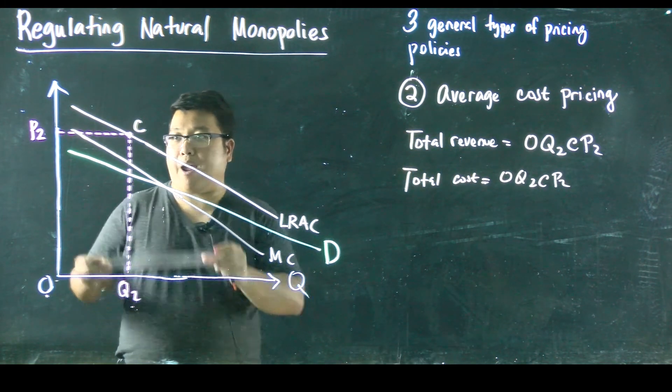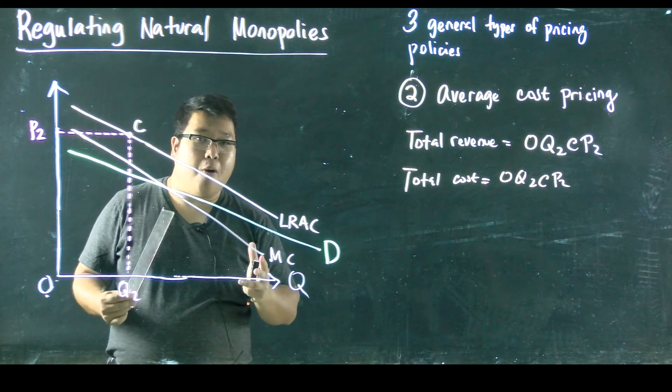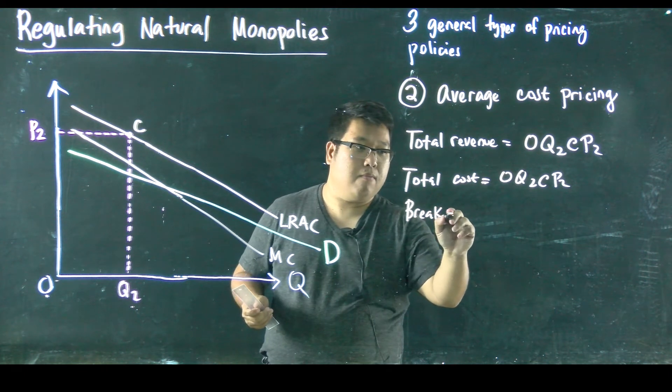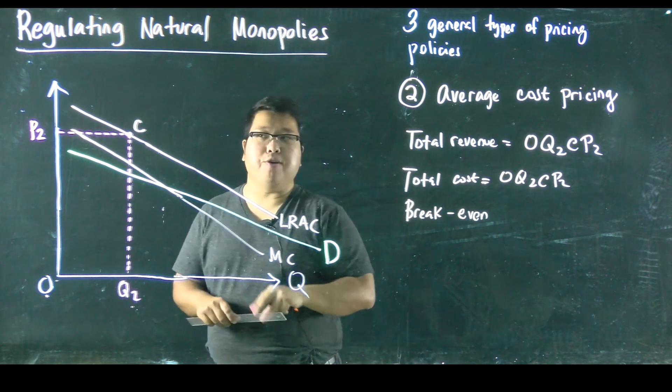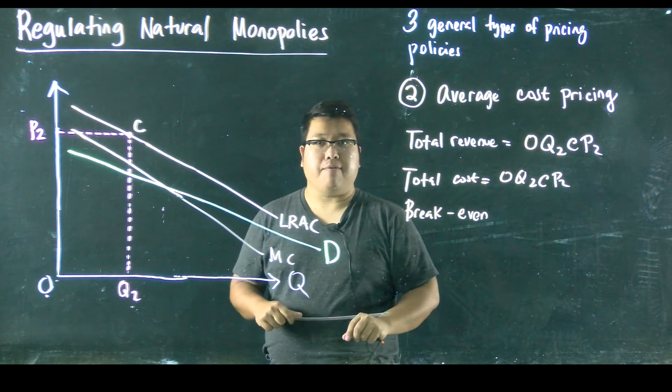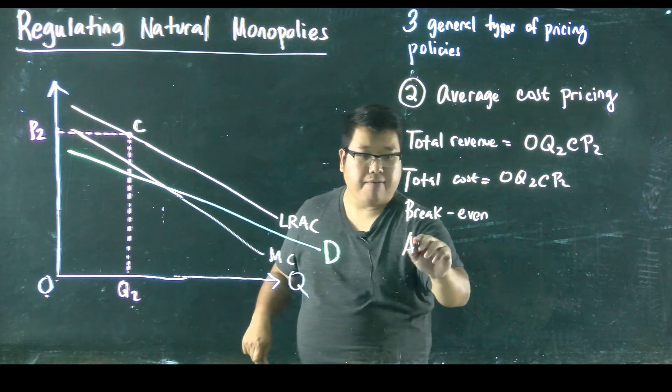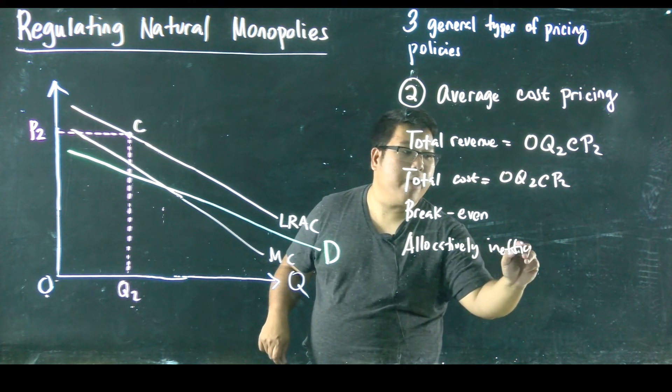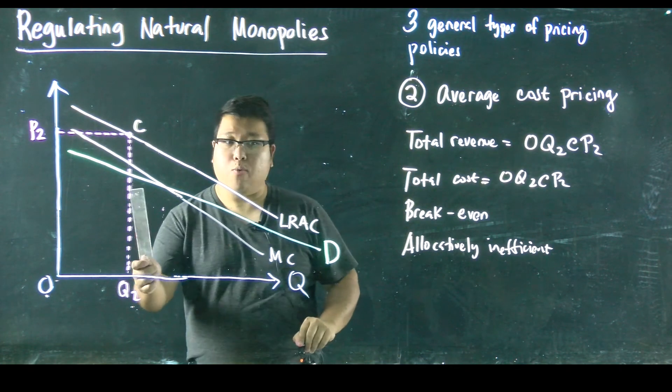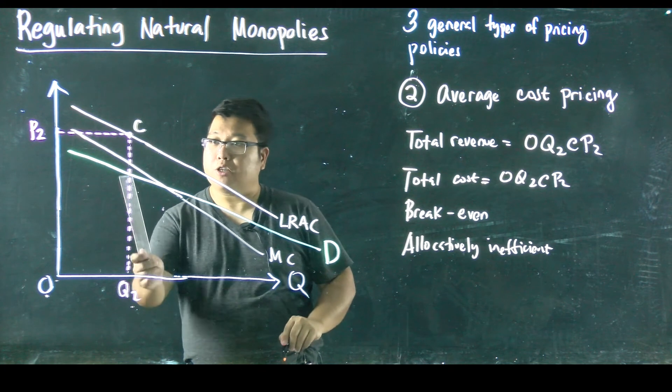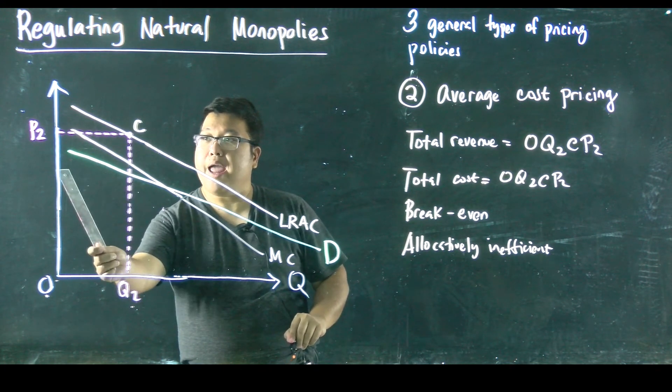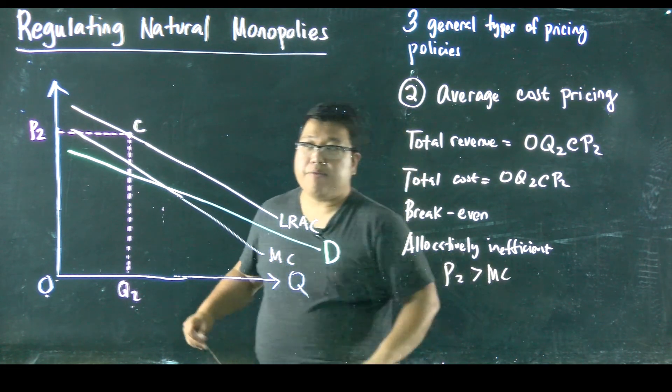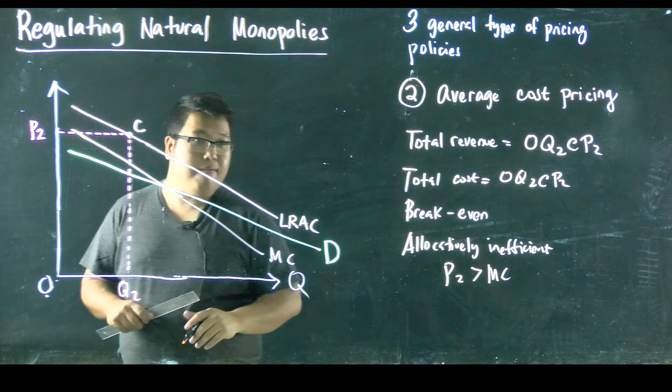In this case, if the regulator will set the price equal to P2, this natural monopoly will break even. Now, question for you is this. Is P2 allocatively efficient? Well, the answer is no. So it's allocatively inefficient. And why is that? Well, because price is not equal to marginal cost. In fact, our marginal cost is right here for Q2, and P2 is way above that. Since P2 is greater than MC, then it's allocatively inefficient.